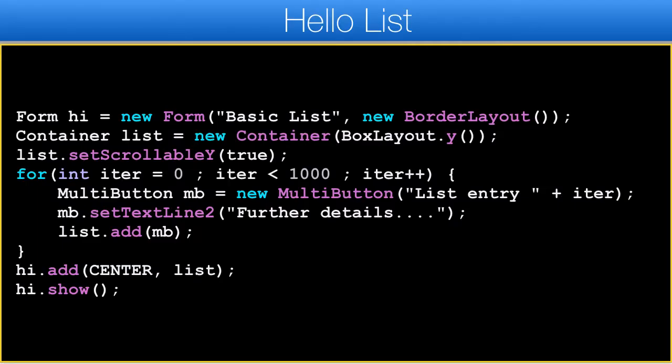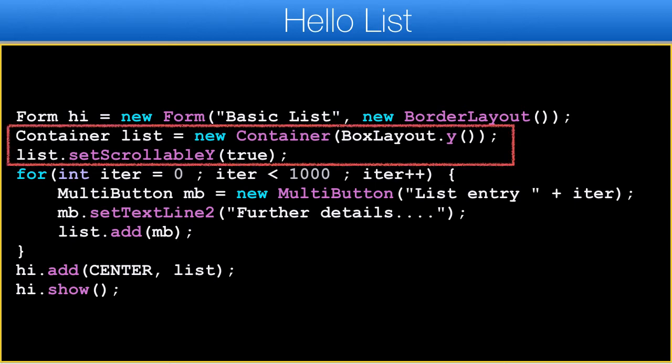Let's start with a hello world for BoxLayout list. This is pretty standard Codename One code — let's go over the different pieces. First we create the list container; notice we set it to scroll on the Y-axis. This allows us to scroll through the list, which is crucial. Note that by default a form is already scrollable on the Y-axis, but I've set the layout to BorderLayout which implicitly disables scrolling.